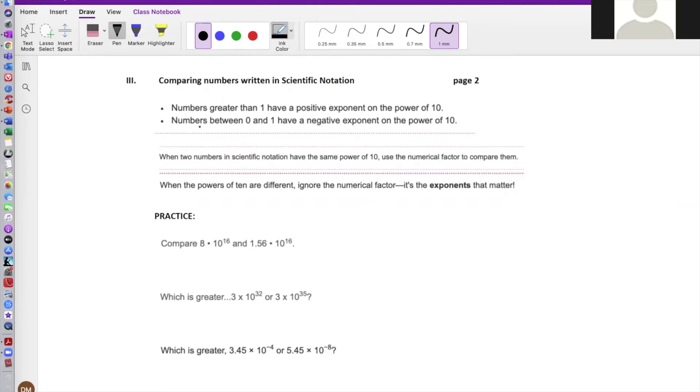There's several important rules that you need to be aware of. Bullet point number one: numbers greater than one have a positive exponent on the power of 10. We saw that in our previous video, and we also found out that numbers between zero and one, like really small numbers like 0.001, have a negative exponent on the power of 10. And when you rewrite that, this one would be 1.0 times 10 to the negative three. So when you have numbers between zero and one, those are decimals, and they're going to be written in scientific notation with a negative exponent on the power of 10, like you see right there.